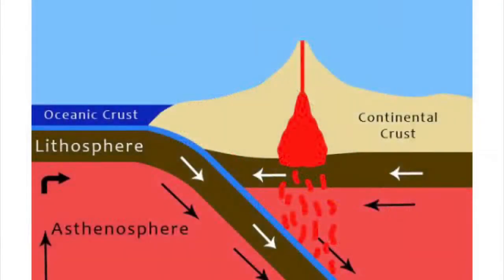Back to our subduction drawing. As the ocean crust goes down, subducting beneath the land crust, serpentinite goes down with it. The whole package gets hotter and hotter until the serpentinite loses the water that it initially absorbed at the mid-ocean ridge, and it turns back into peridotite of the mantle.